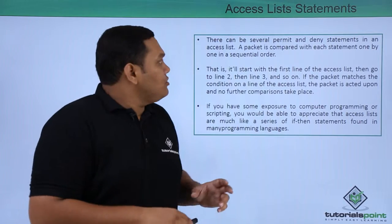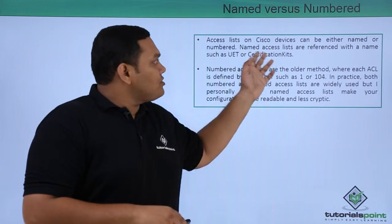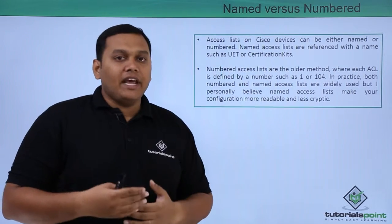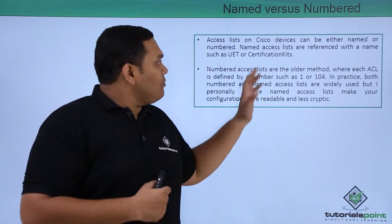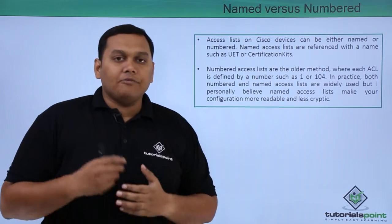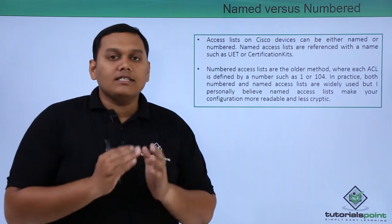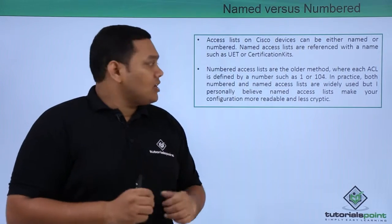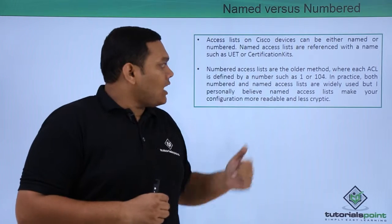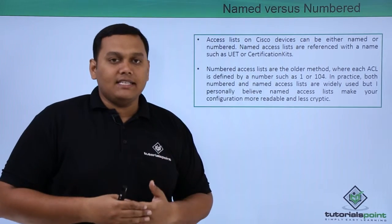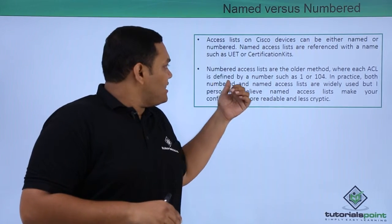Access lists on Cisco devices can be either named or numbered. Named access lists are referenced with a name such as UET or certification kits. Numbered access lists are the older method where each ACL is defined with a number such as 1 or 104.